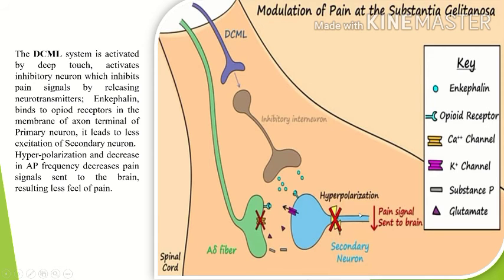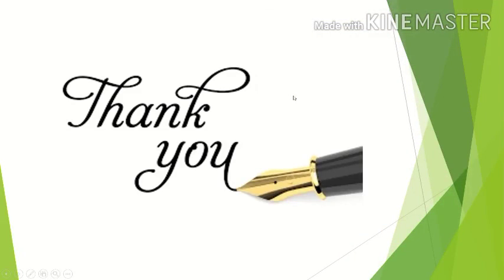So, now we can understand how activating the DCML by rubbing the thumb activates a sequence of events which leads to the disruption in pain signals. That's all from my side. Thanks to everyone.